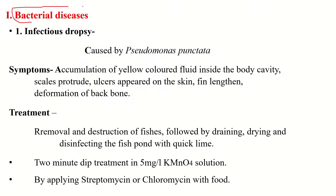The first type of bacterial disease is Infectious Dropsy. This is one of the bacterial diseases and it is caused by the bacterium Pseudomonas punctata. Pseudomonas punctata causes the Infectious Dropsy type of bacterial disease in fish, and it is characterized by accumulation of yellow colored fluid inside the body cavity.